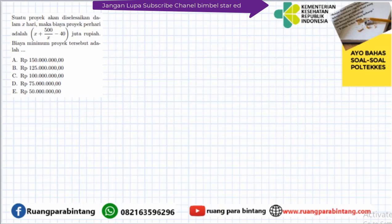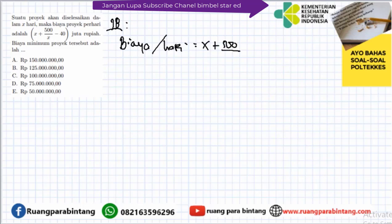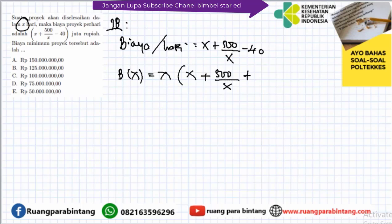Kita lanjut ke soal nomor 3. Suatu proyek akan diselesaikan dalam x hari. Biaya proyek per hari adalah (x + 500/x - 40) dalam juta rupiah. Biaya minimum proyek tersebut adalah? Karena proyek disiapkan dalam x hari, maka biaya total dalam x hari adalah x × (x + 500/x - 40).